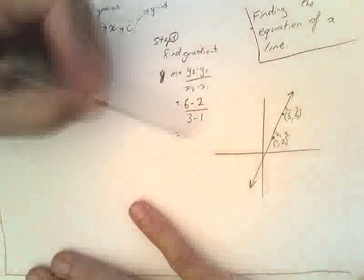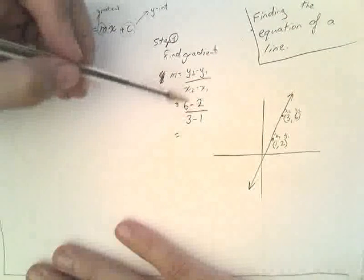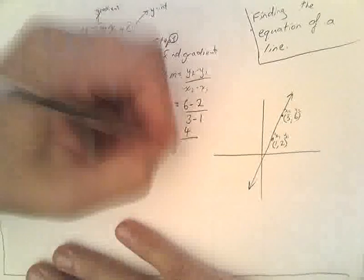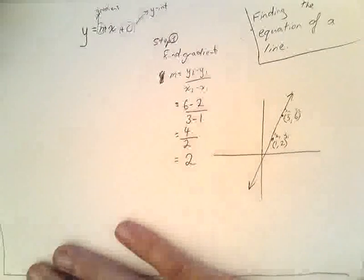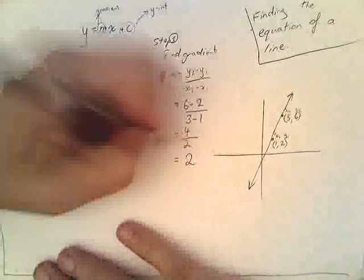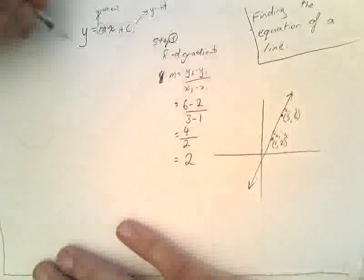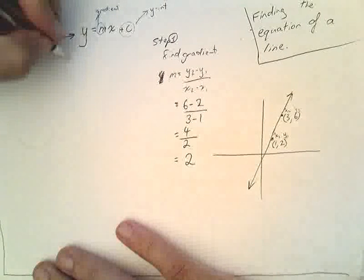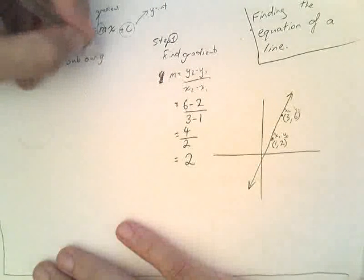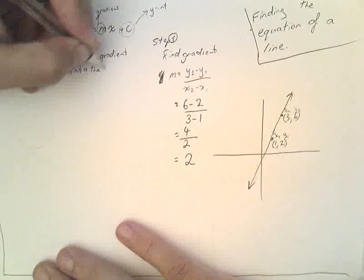When we actually calculate this, we get 6 minus 2, which is 4, 3 minus 1, which is 2. Finally, that gives us a gradient of 2. Really important thing, because now we know that m is equal to 2 for this particular line. So, if we know that all linear equations have this function, we can now sub our gradient into the equation.